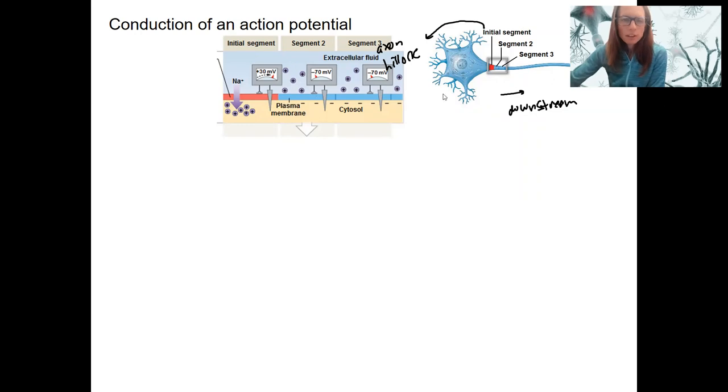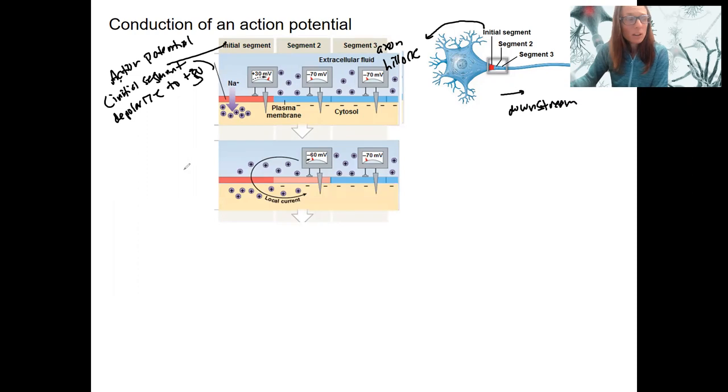So here's what that looks like in terms of the schematic of the membrane we've seen before. Initial segment is right here. That's going to be the segment that depolarizes first. So an action potential occurs there first. So the initial segment is going to depolarize to plus 30. That's an action potential. That is going to cause, but what do you think? So these ions are in here.